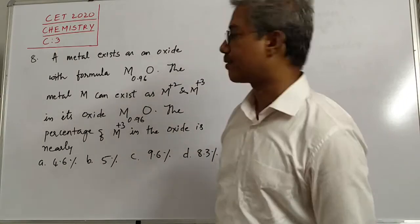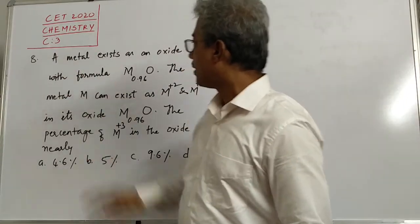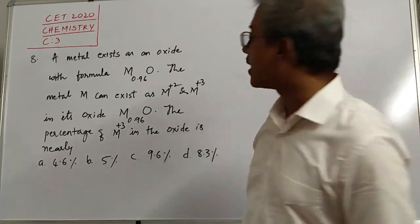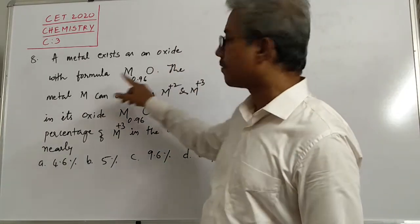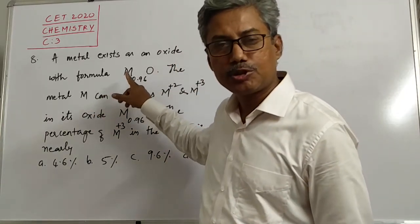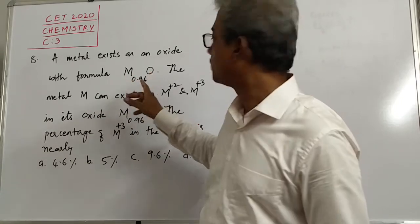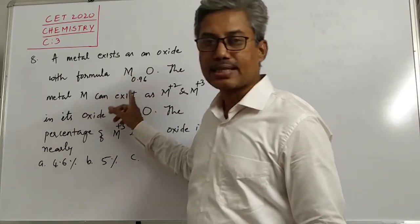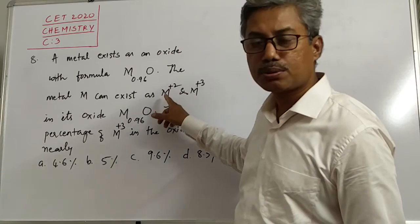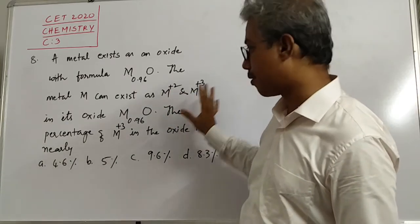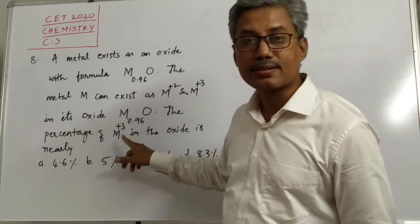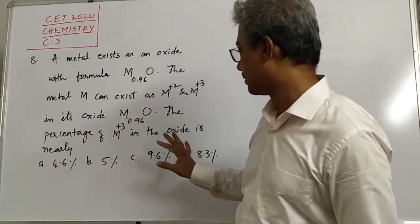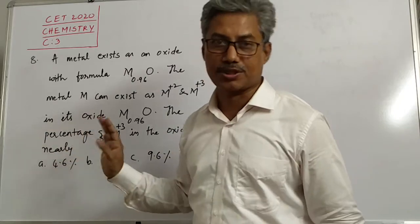Okay, let us take a next question. Question number 8. It says that a metal exists as an oxide with the formula M0.96O. The metal M exists as plus 2 as well as plus 3 ions in its oxide. The percentage of M plus 3 in the oxide is nearly is how much?